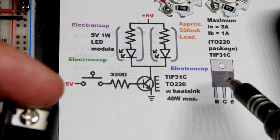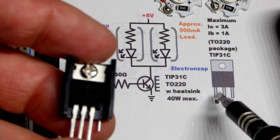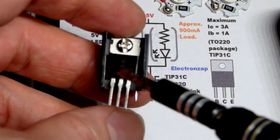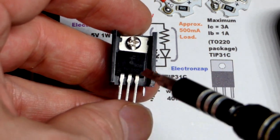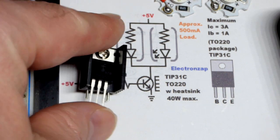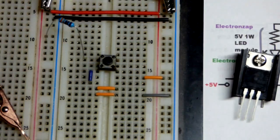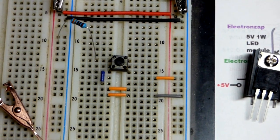Their pin layouts are emitter base collector. But here you can see with this one, looking at the front there, we got that base on the left, collector in the middle, and emitter on the right. So let's go to the breadboard and wire this up.